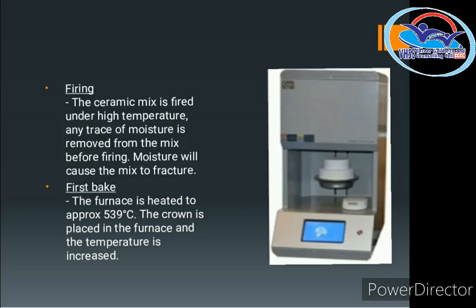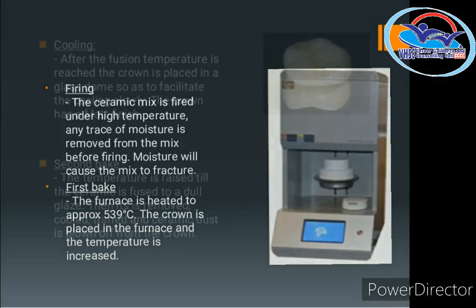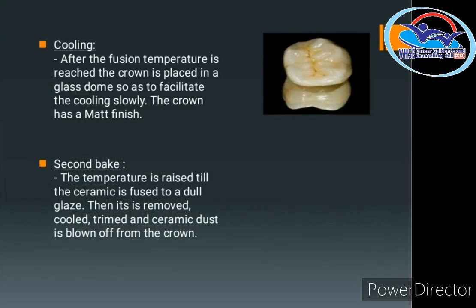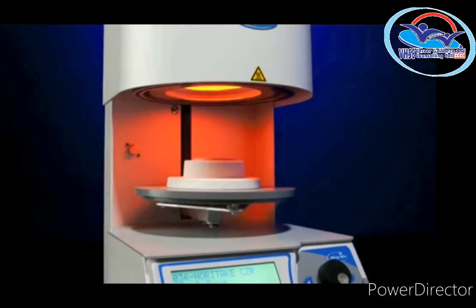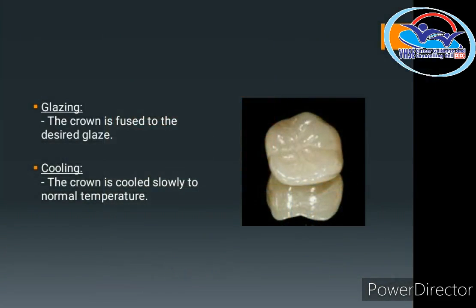After condensation and shaping the tooth form, the next step is firing in the furnace — the first baking. Following firing, color stains are applied, and then the ceramic is placed back in the furnace for a second baking. After that, a dull glaze is applied to the ceramic surface.